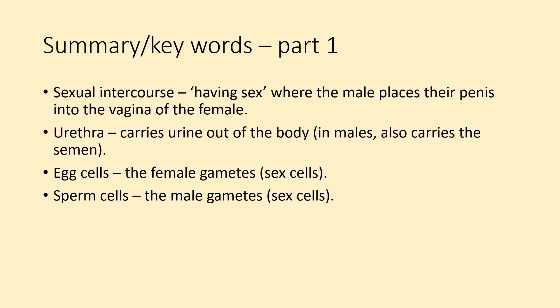Summary keywords, part one. There are a lot of new keywords in this lesson. Sexual intercourse is having sex, where the male places their penis into the vagina of the female. The urethra carries urine out of the body; in males, it also carries the semen. Egg cells are the female gametes. Sperm cells are the male gametes.